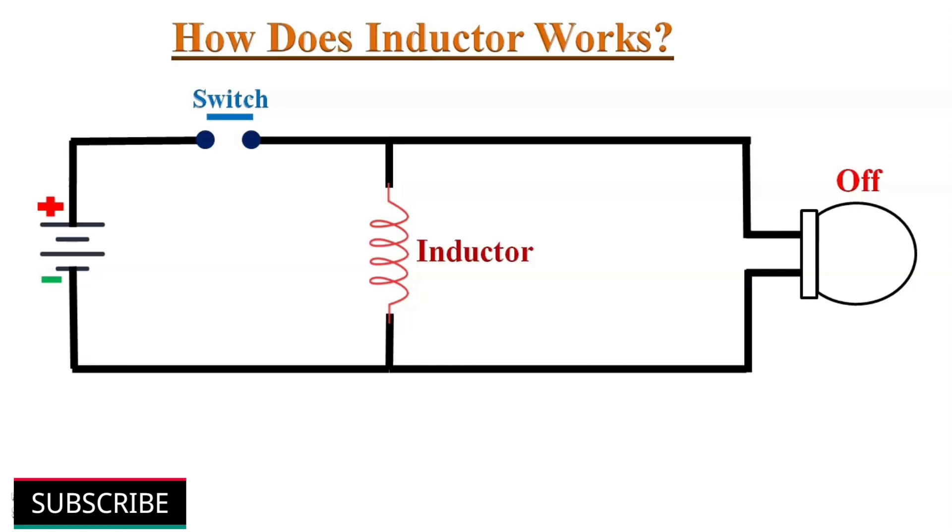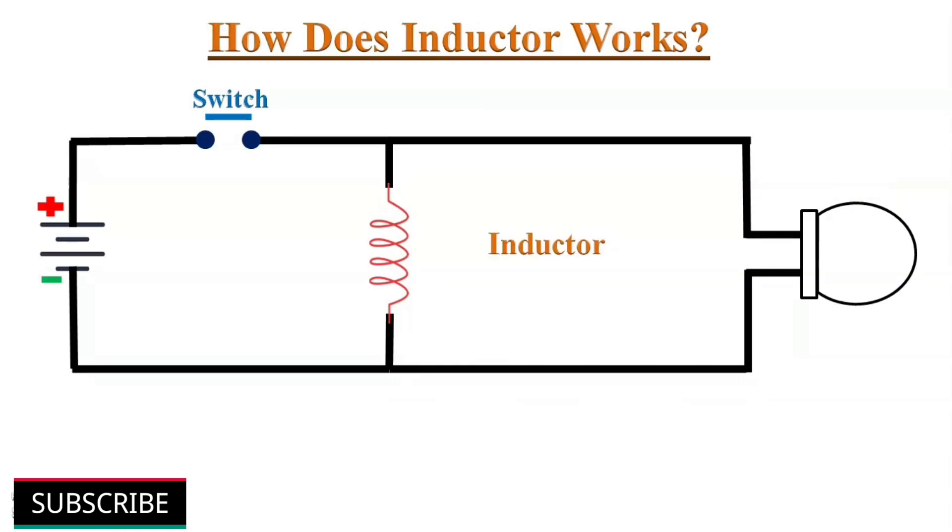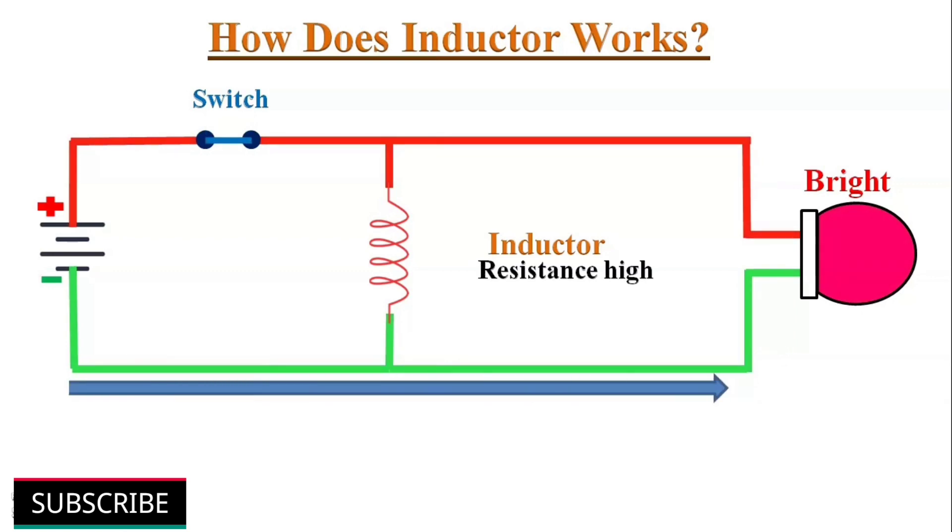Let me explain why this circuit behaves like this. When we power on this circuit, the electrons will start to flow through the lamp, powering it on brightly. A very small current will flow through the inductor because it has higher resistance than the filament of the lamp.